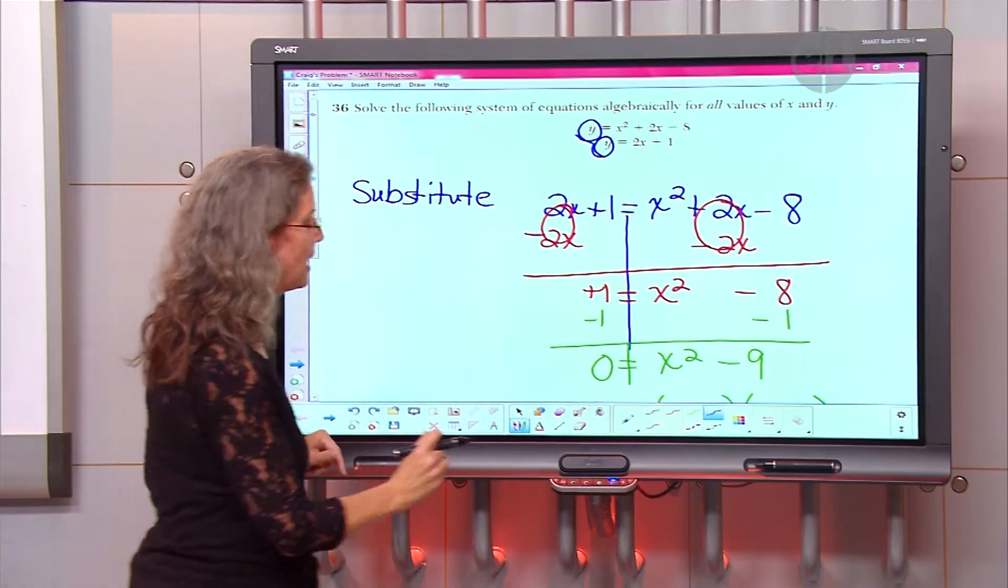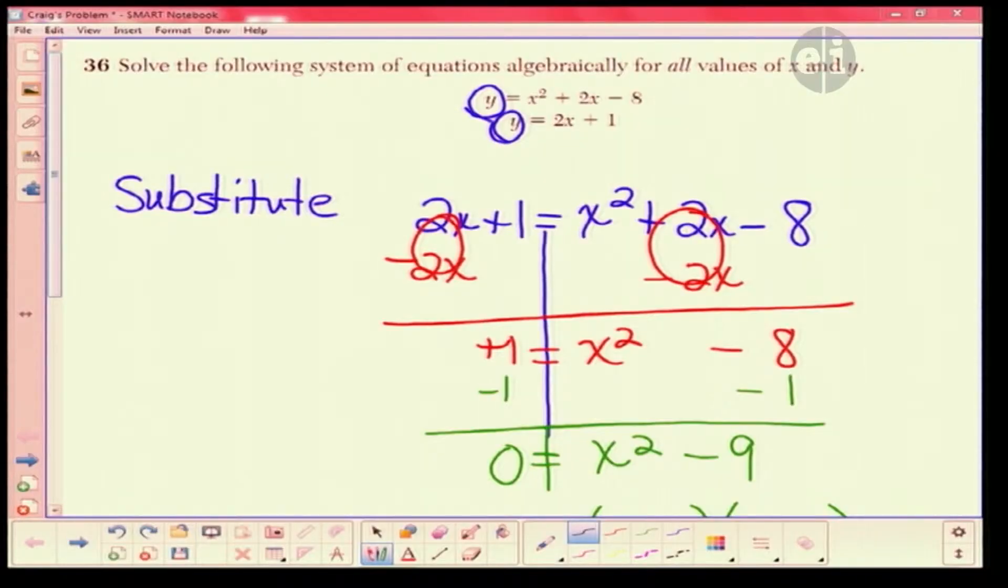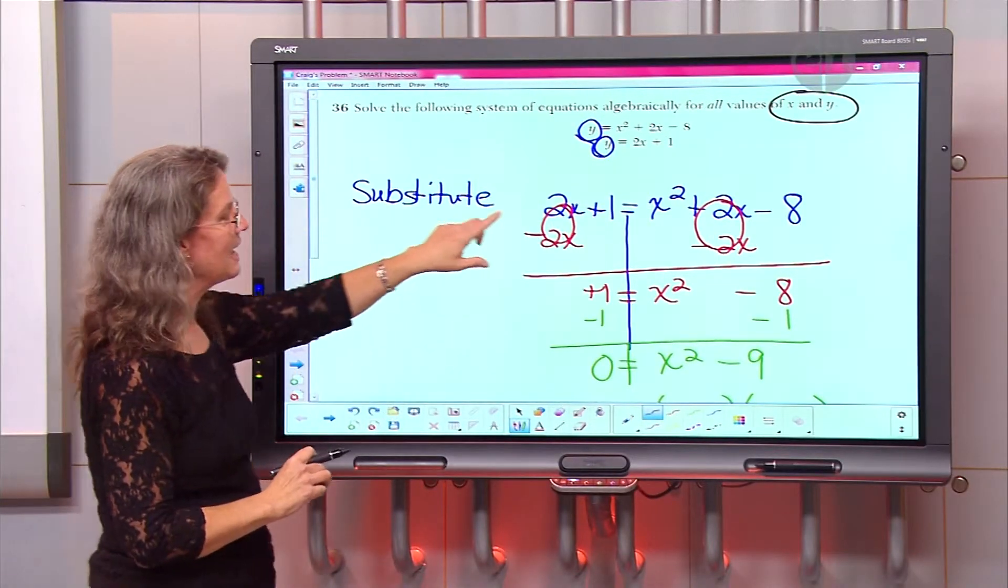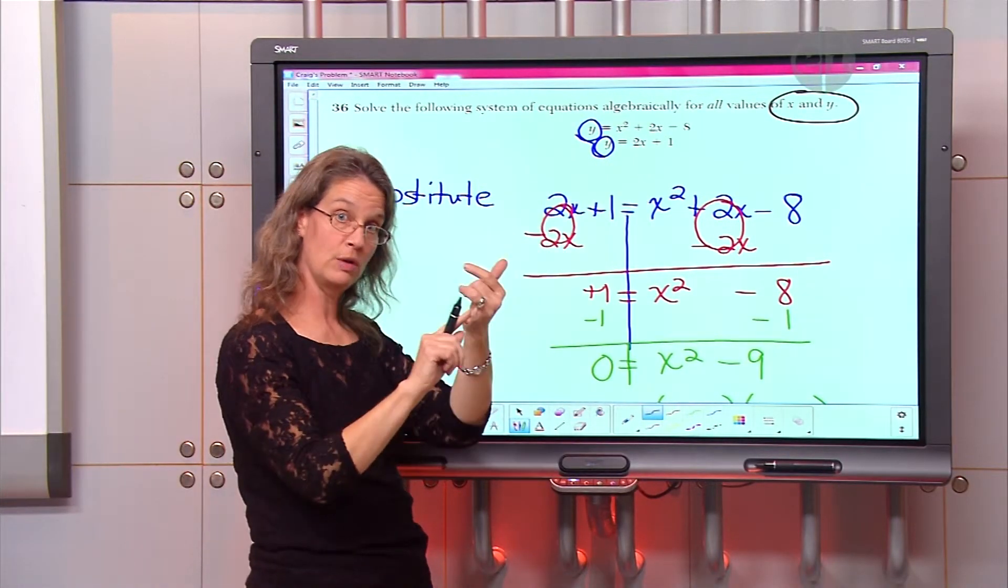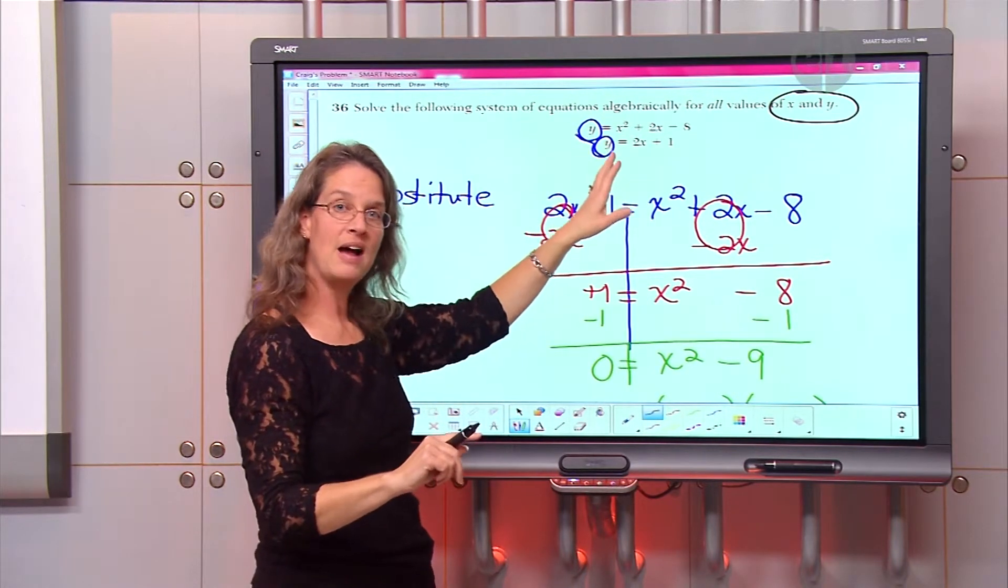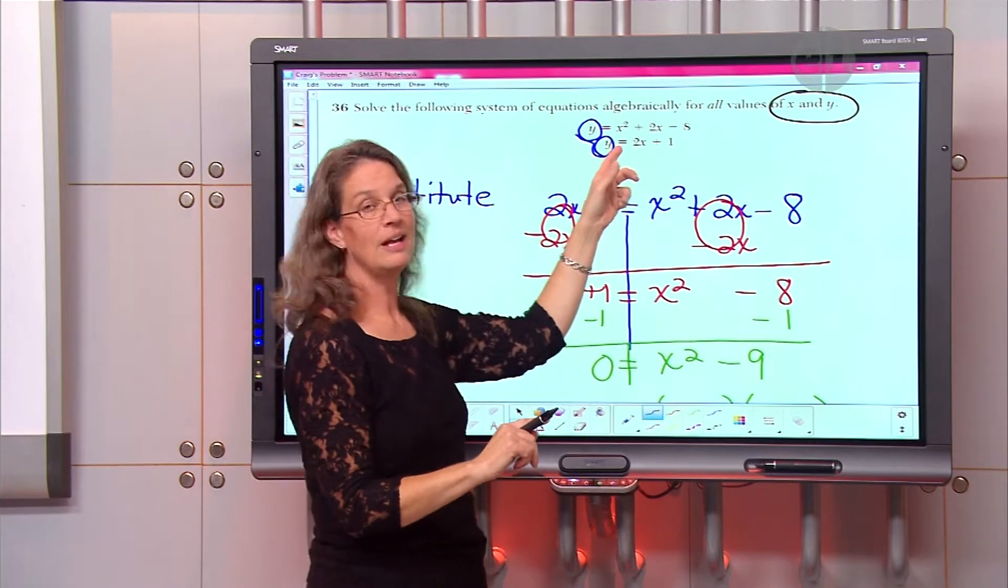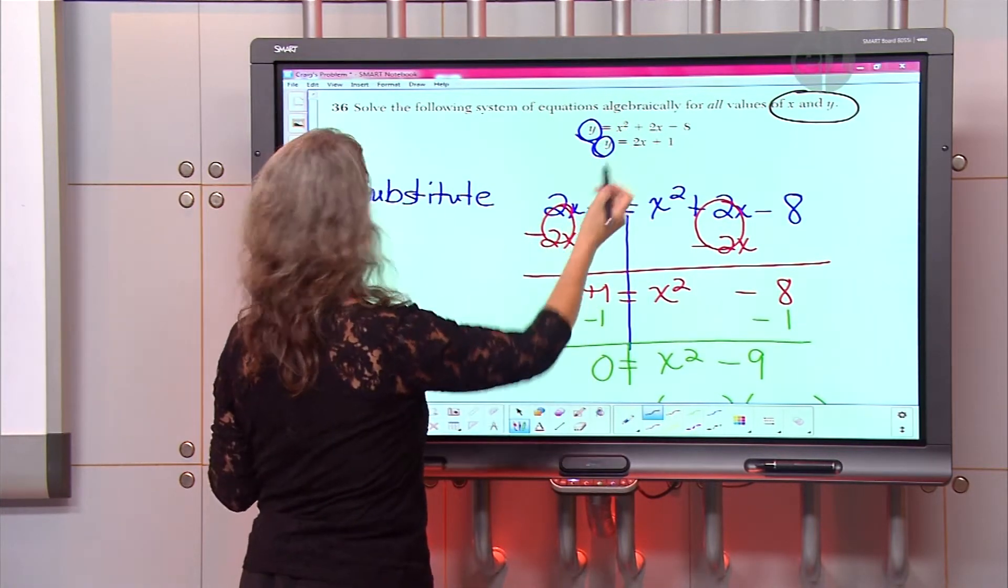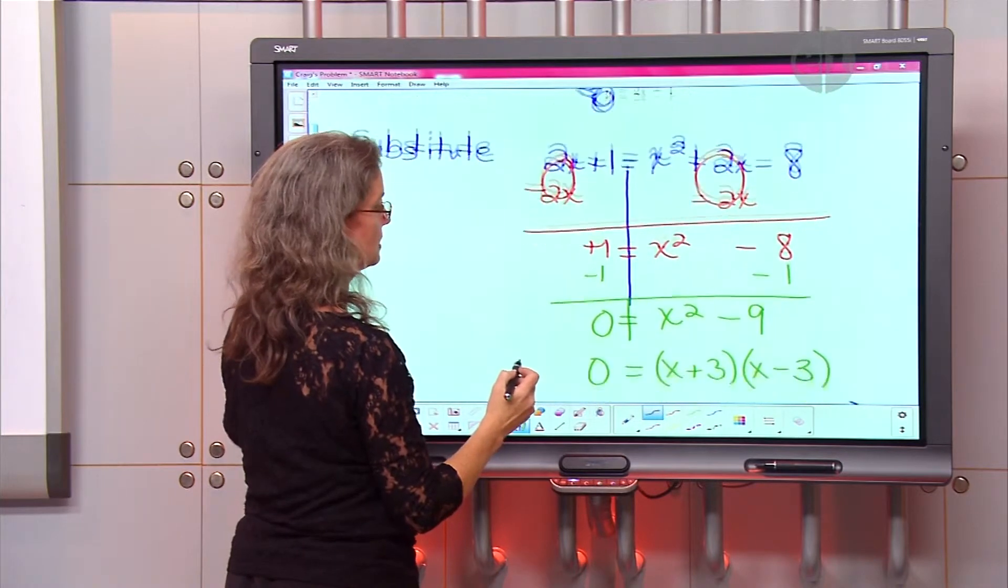But I believe if we go all the way back up here, this said x and y. So we have to find both. That means I have to plug my two x's, the 3 and the negative 3, in place of one of these and find what y would equal. Well, I don't like to work with x squared, so I'm not going to do that. So I'm going to go in and plug it into the 2x plus 1.